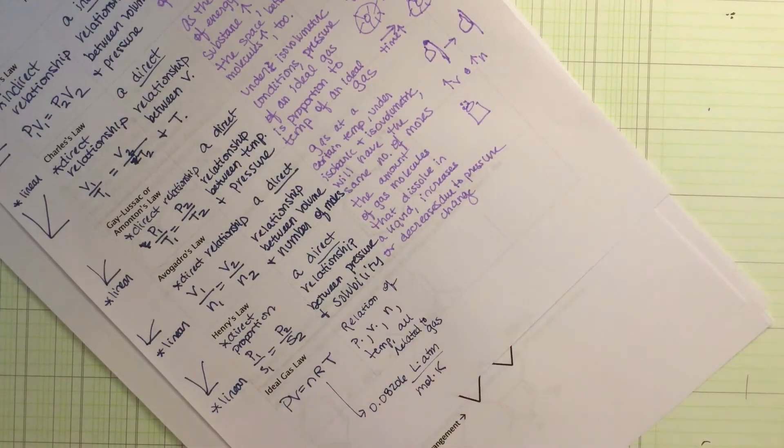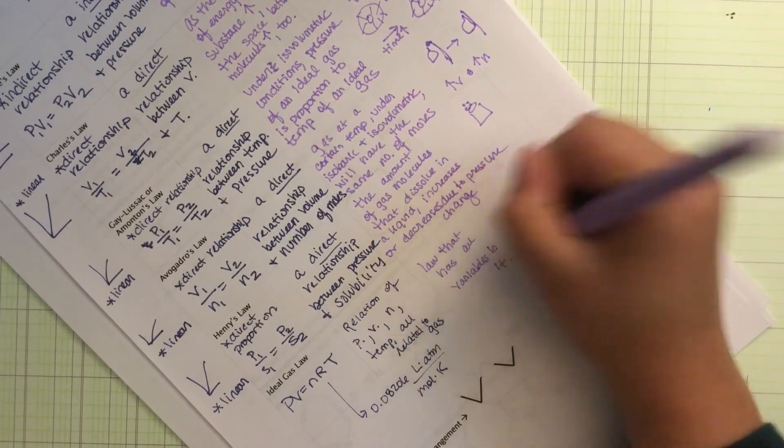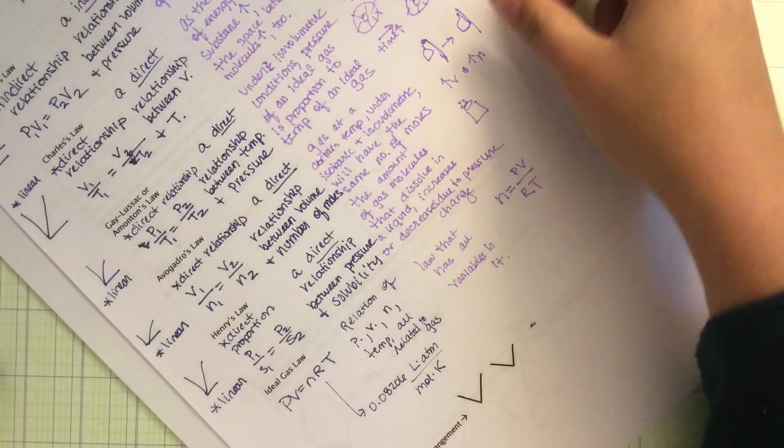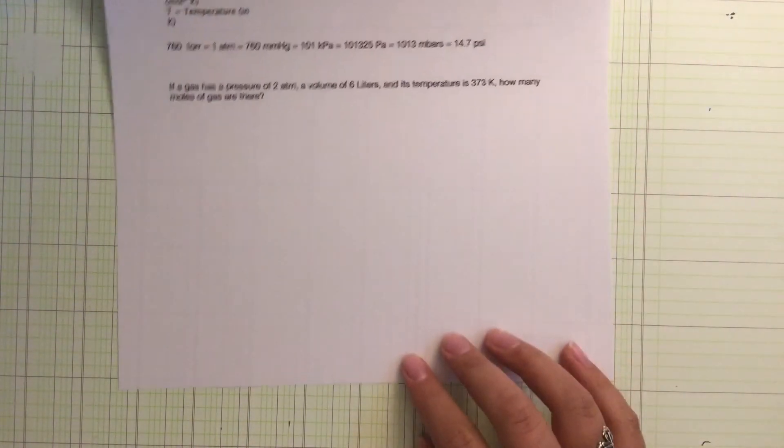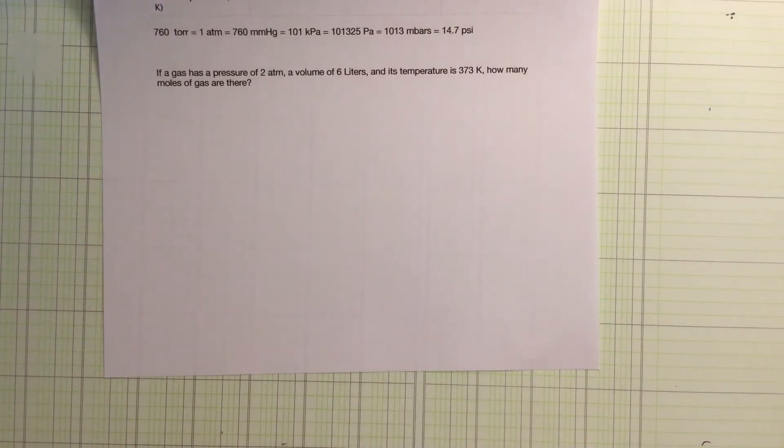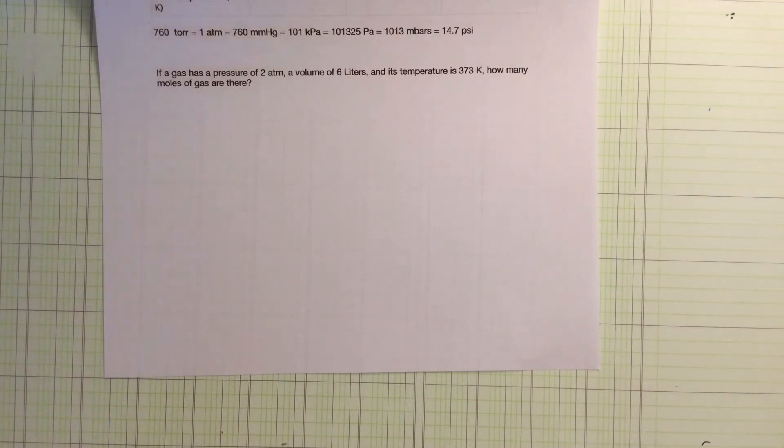My own definition is kind of a cop-out, just that the law has all the variables in it. We typically think about this sometimes when we're solving for moles, and so we could just use that instead of having to plug it in and doing some, this is just a straightforward equation. Now, the other thing that I want to talk about in relation to the gas laws is what we're actually using when we're talking about Torr and that stuff. 760 Torr is equal to 1 ATM, which is equal to 760 millimeters of mercury, which is equal to 101 kilopascals, which is equal to 101,325 pascals, which is equal to 1013 millibars, and that's equal to 14.7 psi. Just be familiar with some of the units of pressure, and obviously then how to convert between them.